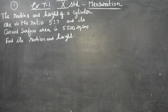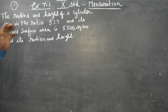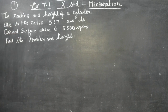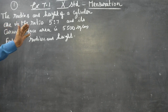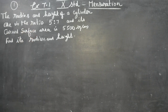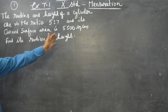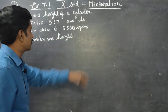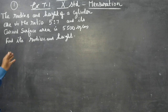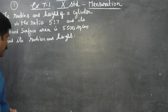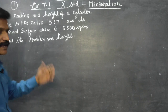Dear 10th standard students, in chapter number 7, Mensuration: the radius and height of a cylinder are in the ratio 5 to 7, the curved surface area is 5500 square centimeters. Find the radius and height.